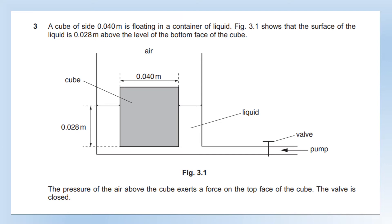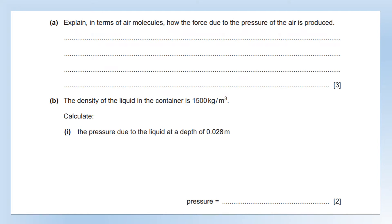A cube of side 0.04 metres is floating in a container of liquid. The diagram shows the surface of the liquid is 0.028 metres above the level of the bottom face of the cube. The pressure of the air above the cube exerts a force on the top face of the cube. The valve is closed — that means no liquid is able to escape or enter at that point. Explain, in terms of air molecules, how the force due to the pressure of air is produced.